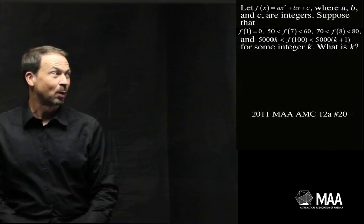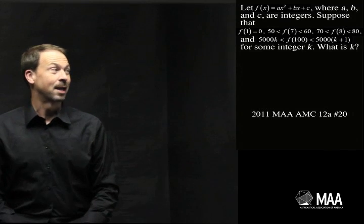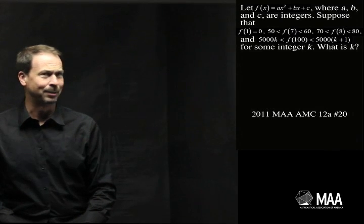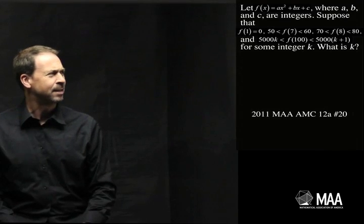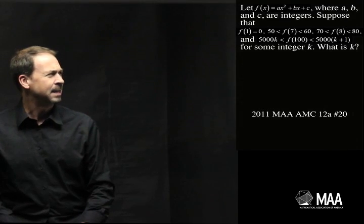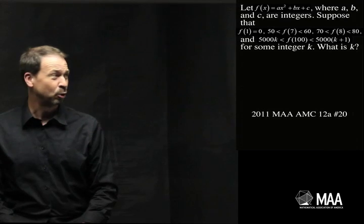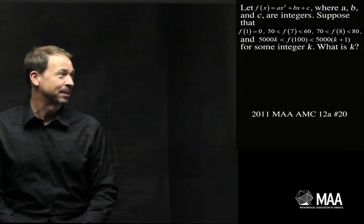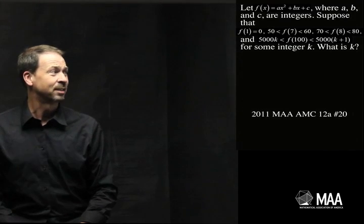Let f(x) equal ax squared plus bx plus c, where a, b, c are integers. And suppose that f(1) is 0. And f(7) is between 50 and 60, and f(8) is between 70 and 80. And f(100) is between 5000k and 5000 times k plus 1 for some integer k. And the question is, what's k?